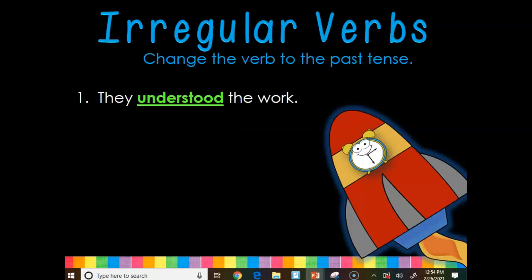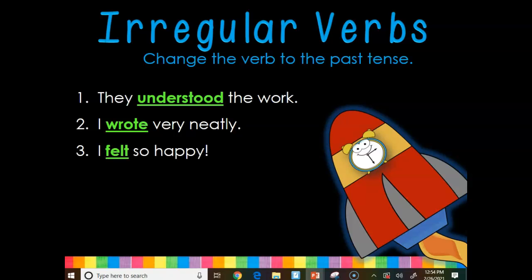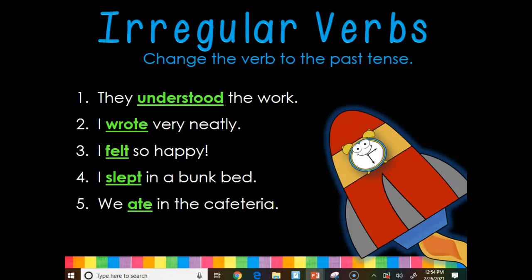Let's check your work. They understood the work — understood is past tense of understand. I wrote very neatly — wrote is past tense of write. I felt so happy — felt is past tense of feel. I slept in a bunk bed — slept is past tense of sleep. We ate in the cafeteria — ate is past tense of eat. I knew how to add numbers — knew is past tense of know.